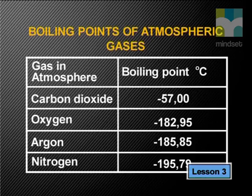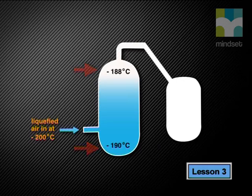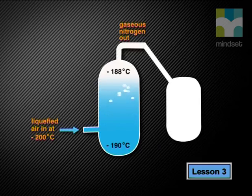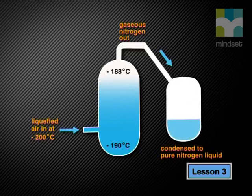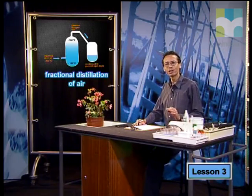Can you think of a process for separating a mixture of gases? Here's a hint: in a mixture, each gas has a unique boiling point. To start the process, chemists collect air from the atmosphere. This air is compressed until it becomes a liquid. The conditions of pressure and temperature are then changed. The gas with the lowest boiling point boils first, so it can be collected. At minus 188 degrees, only nitrogen boils. The gas is collected and allowed to condense to form pure nitrogen liquid. This process is called the fractional distillation of air.